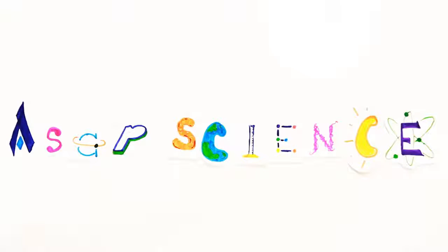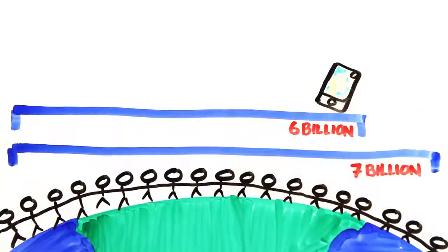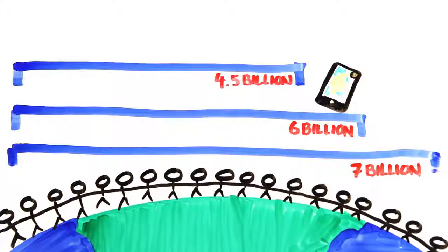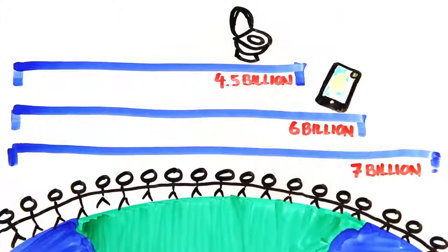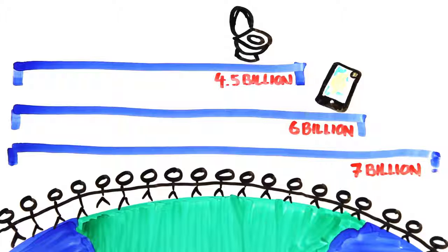Of the 7 billion people on earth, roughly 6 billion own a cell phone, which is pretty shocking given that only 4.5 billion have access to a working toilet. So how are these popular gadgets changing your body and brain?